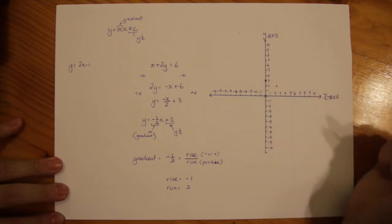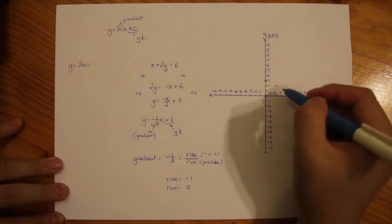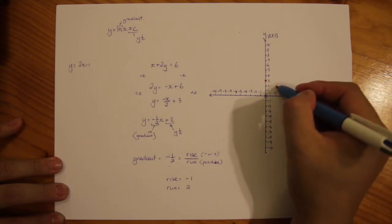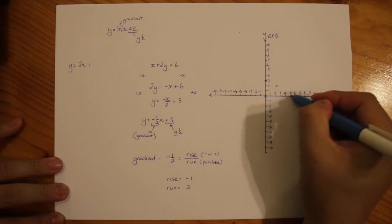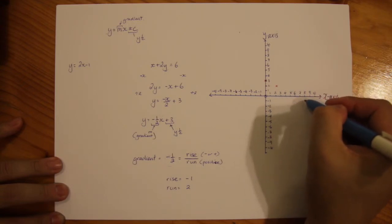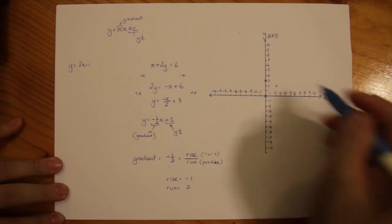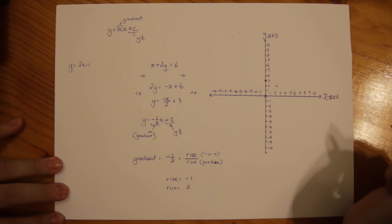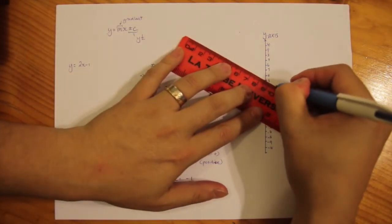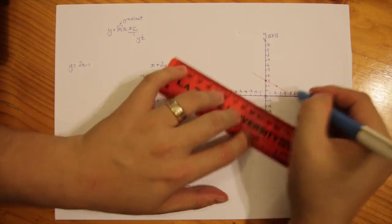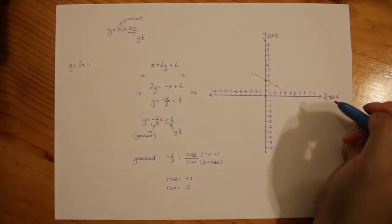That will be our second point. Now it ends up working like a set of stairs if you keep going. It's down 1, 2 across, down 1, 2 across, down 1, 2 across and so forth. But I don't need to add all those extra steps. Once I've worked out my second one, I can then confidently join those two together and there's my line.